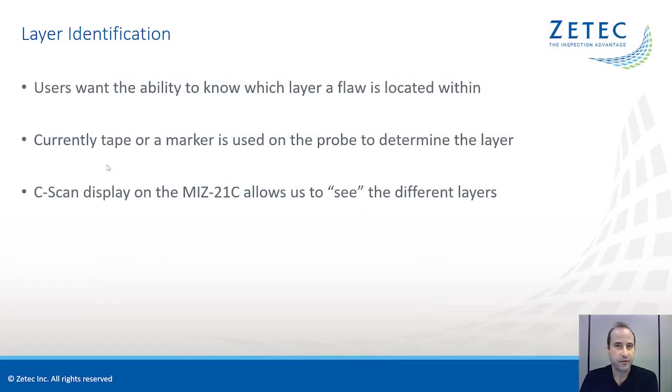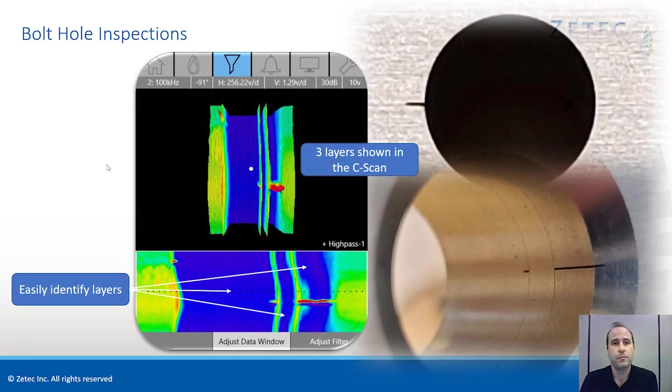A challenge in the aerospace industry is knowing which layer a flaw is in because this may determine if a repair is warranted. Repairs themselves can cause damage to a hole and bolt holes have been unnecessarily repaired because where the flaw was located was not accurately known. The C-scan display on the MIS-21C now allows the inspector to see the different layers. Here is data from the NRK block but this time the channel is focused on detection of the layers in the hole. As you can see here you can easily see three separate layers in blue and the interfaces of those layers in green.